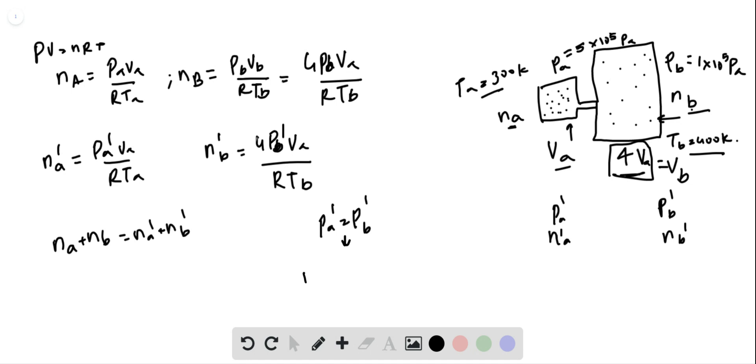PA dash equals PB dash means NA dash R TA by VA equals NB dash R TB by 4 VA. We cancel VA and R and we see that NB dash by NA dash is 4 TA by TB.